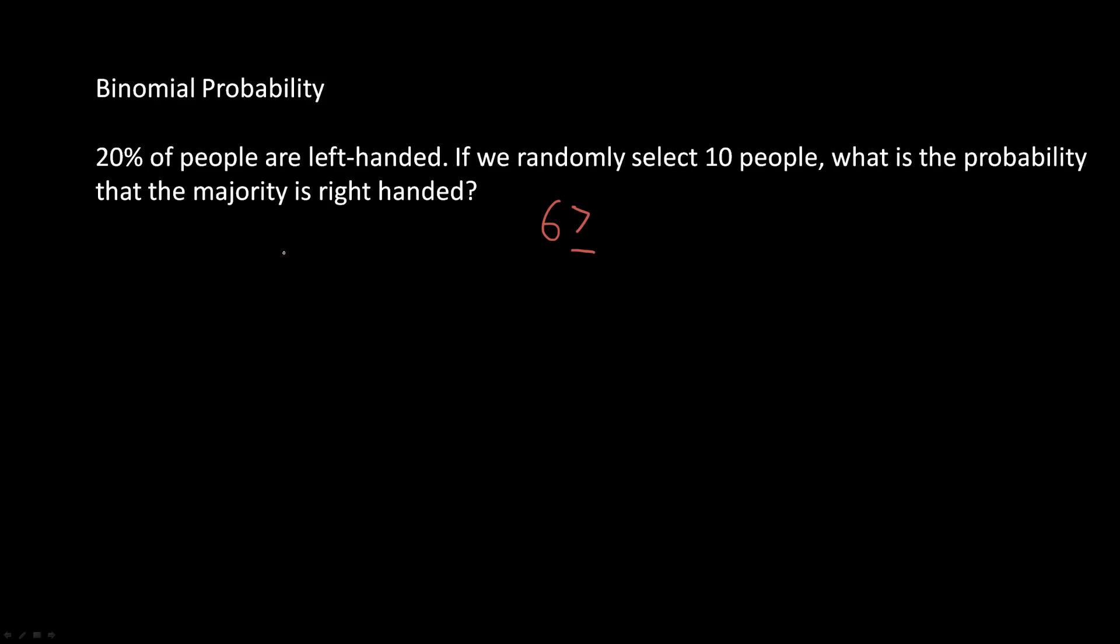So the probability that someone is right-handed would be equal to 1 minus the probability that someone is left-handed or 0.2, which is equal to 0.8. So here we can see that our sample size is going to be n equals 10, and our probability p equals 0.8.